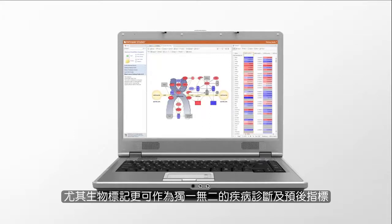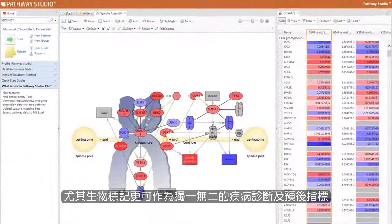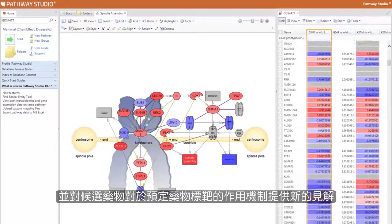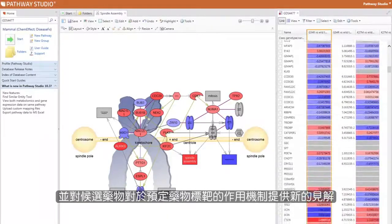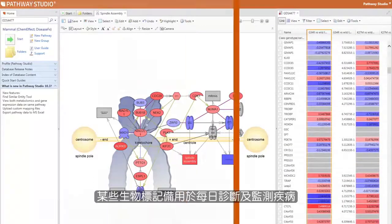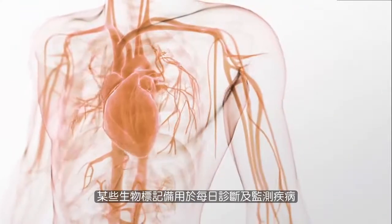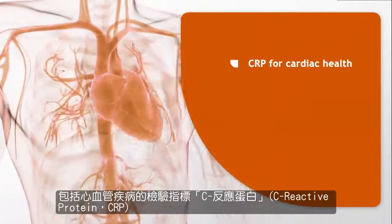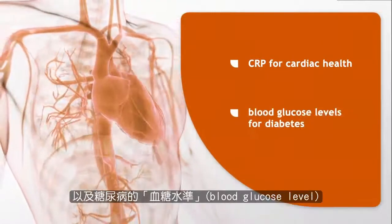In particular, biomarkers can serve as unique disease prognostic and diagnostic signatures, as well as offer insights into drug action on the intended drug targets. Some examples of biomarkers that are used every day to diagnose and monitor diseases include C-reactive protein for cardiac health and blood glucose levels for diabetes.